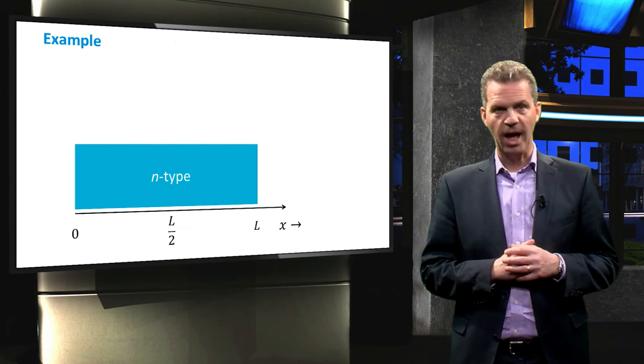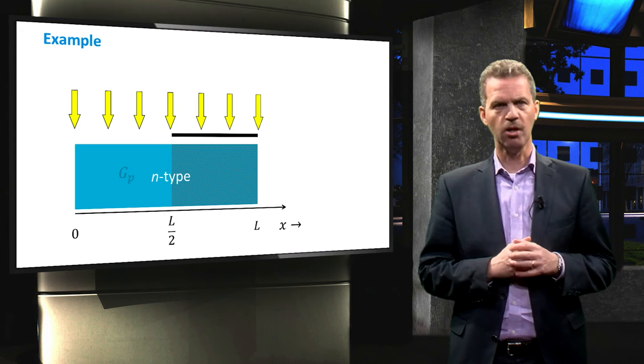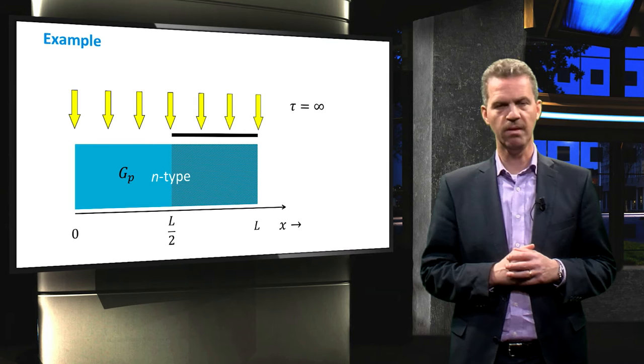We will now look at an example. Imagine a slab of n-type material of length L. We illuminate the material with a uniform illumination, but shade half of it. This results in a uniform generation in the left-hand half of the material and no generation in the right-hand half. For the sake of simplicity, we assume an infinite carrier lifetime,